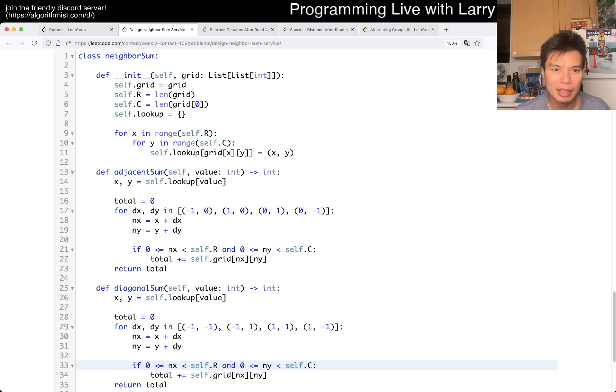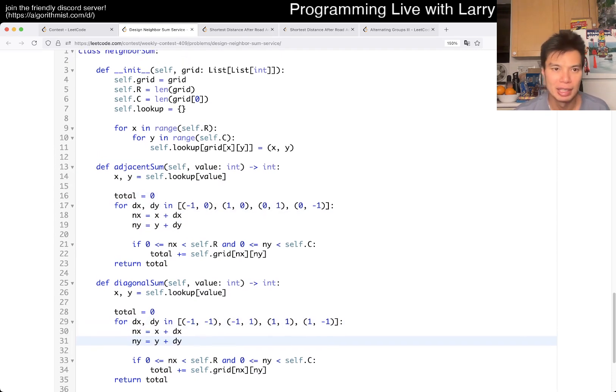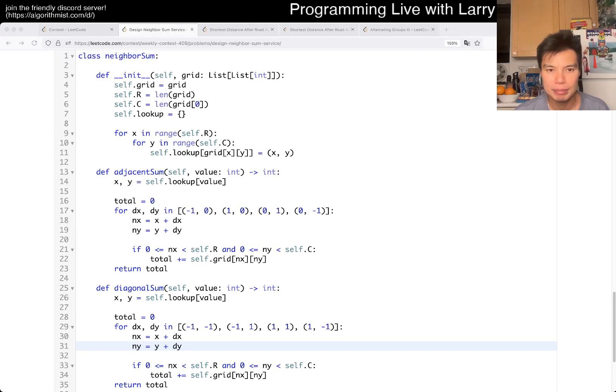Yeah. This is linear time and linear space due to the lookup. And this is constant time, constant space. And this one as well, because this is just lookup. This loops four times and this loops four times. So that's why the complexity. But yeah, that's all I have for this one. Let me know what you think.